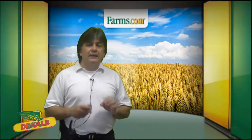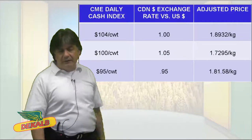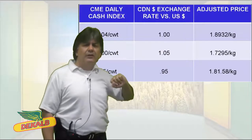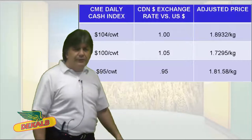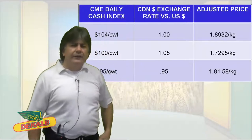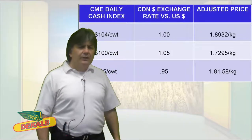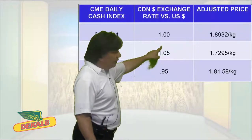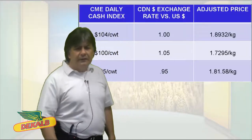Canadian meat basis is exposed to large Canadian exchange rate swings. For example, where futures are 100 for hogs and the dollar is at par versus the US dollar, the equivalency is 1.89. If futures are 104 and the dollar is 105, then the equivalent is 1.72. And when futures are 95 with the dollar lower at 95 cents versus the US dollar, we've got an equivalent of 1.81.